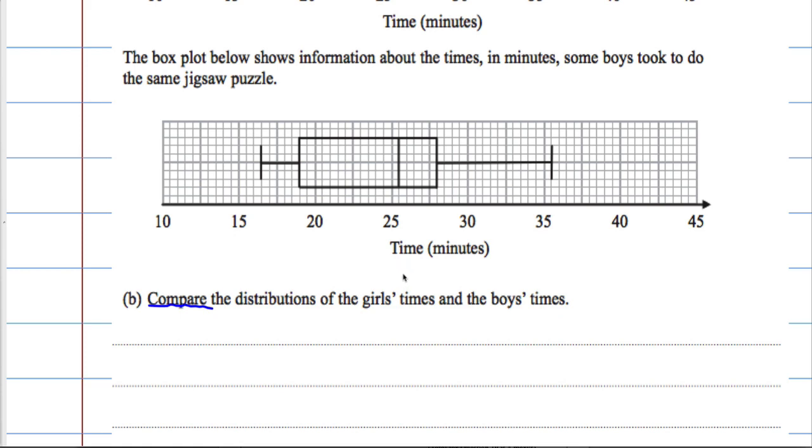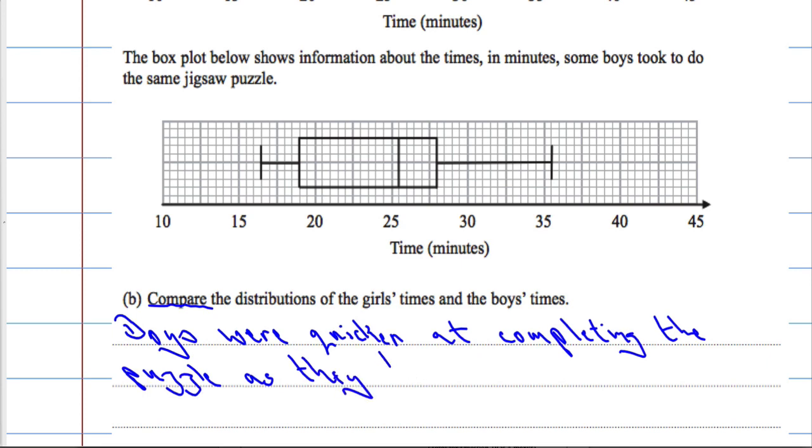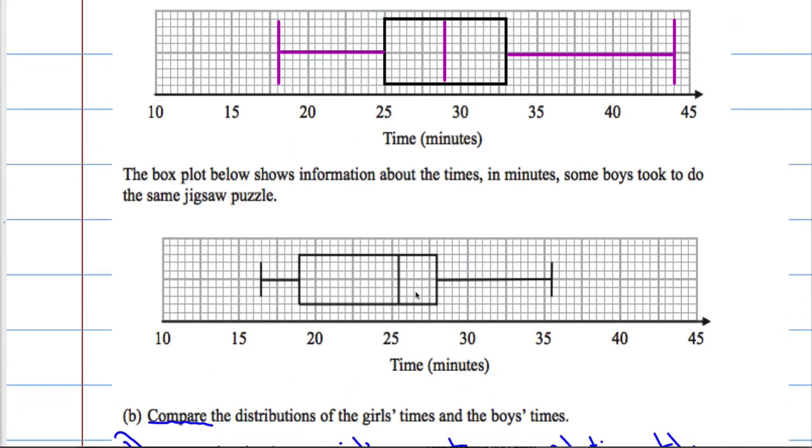So in other words, boys were quicker on average at completing the puzzle. So we can say that boys were quicker at completing the puzzle. And give a reason as well. As they have a smaller median. So on average, the boys were quicker, as seen because the median time is smaller for the boys.